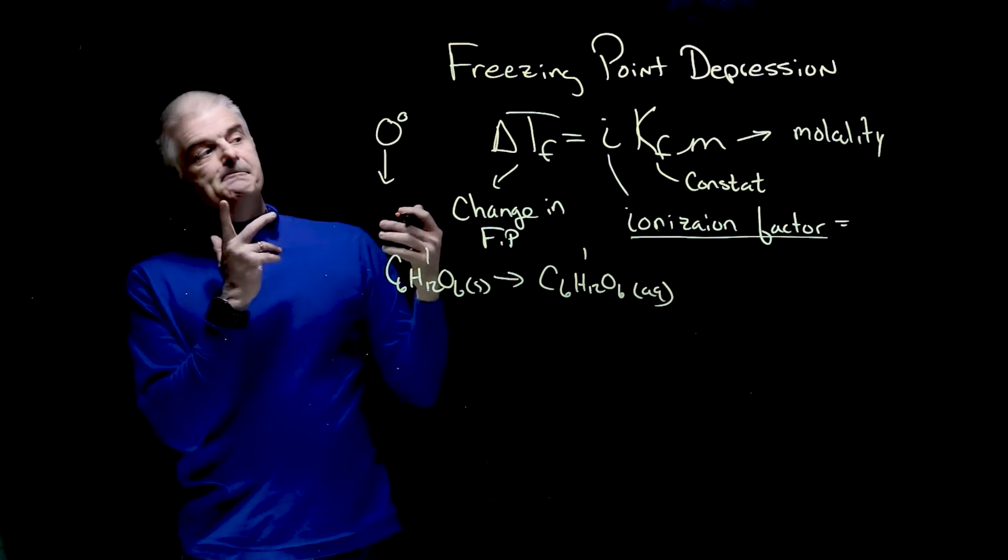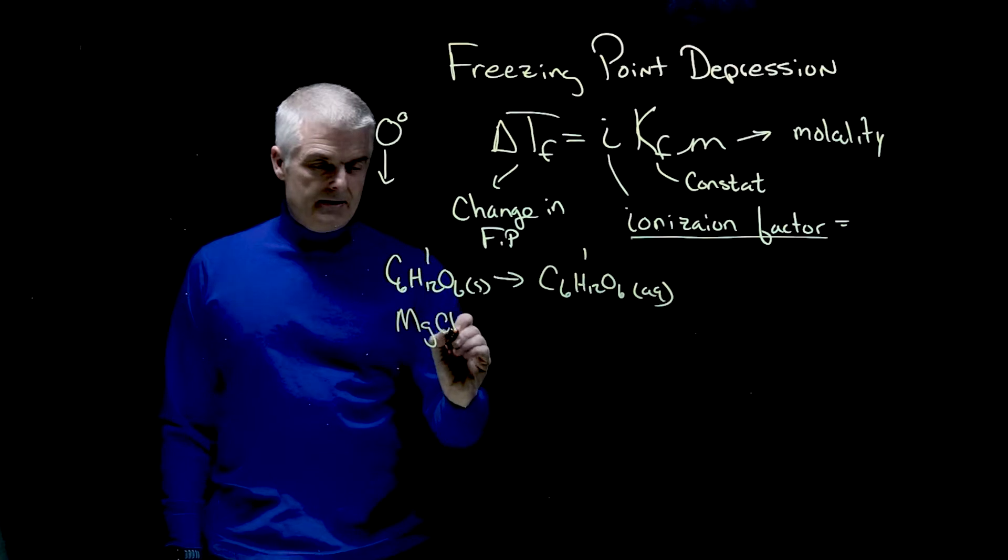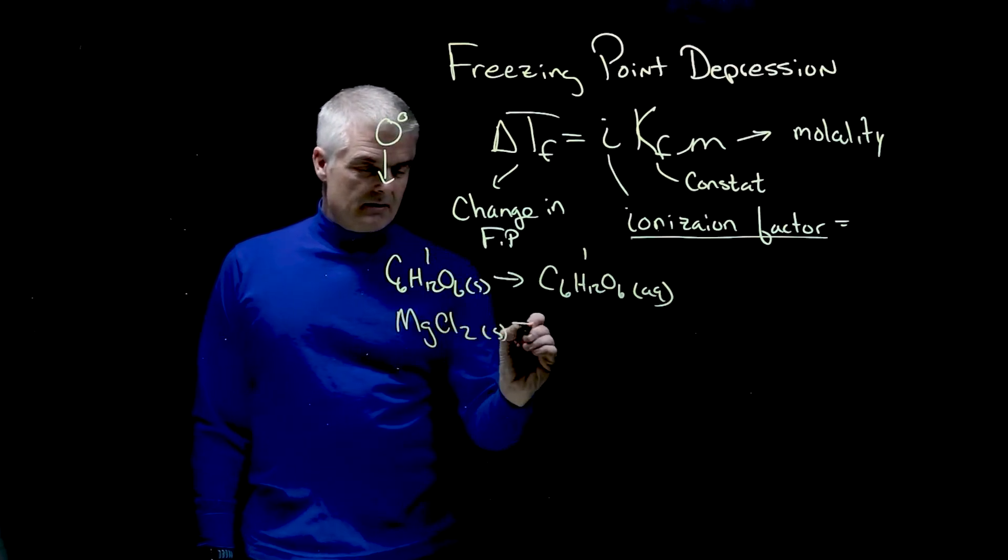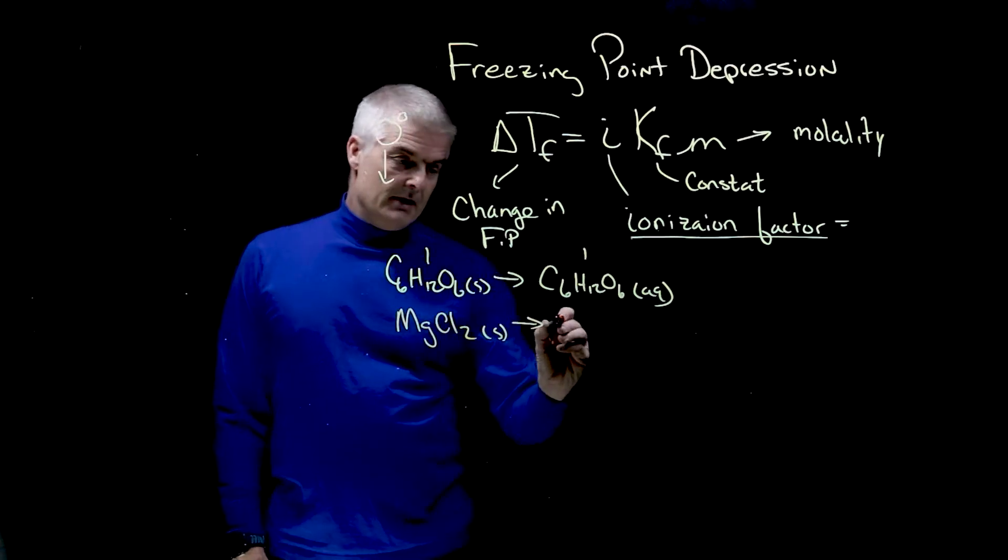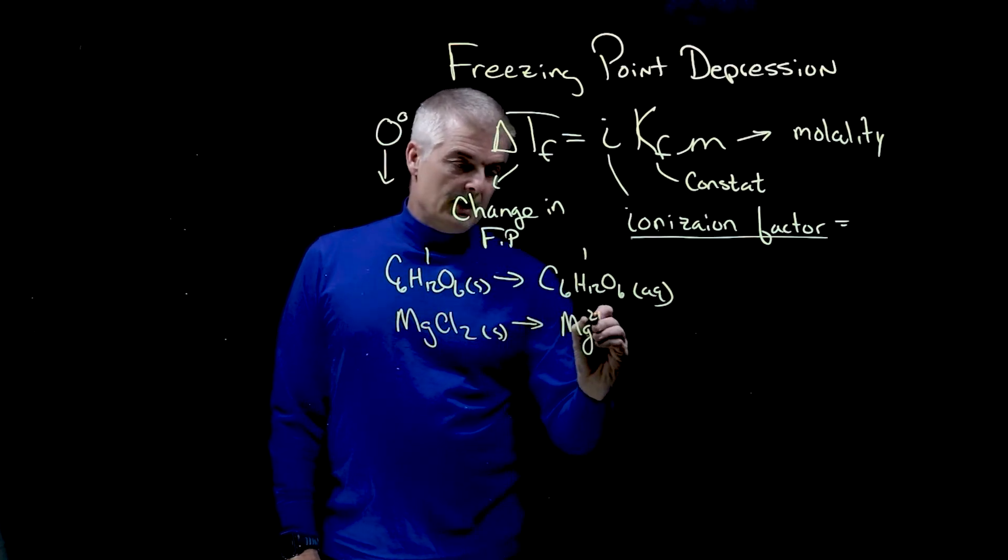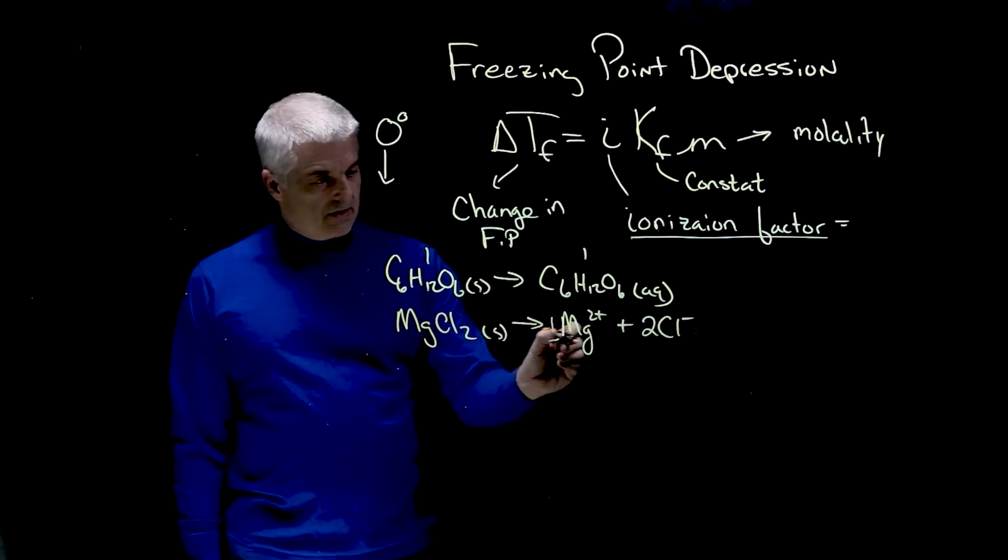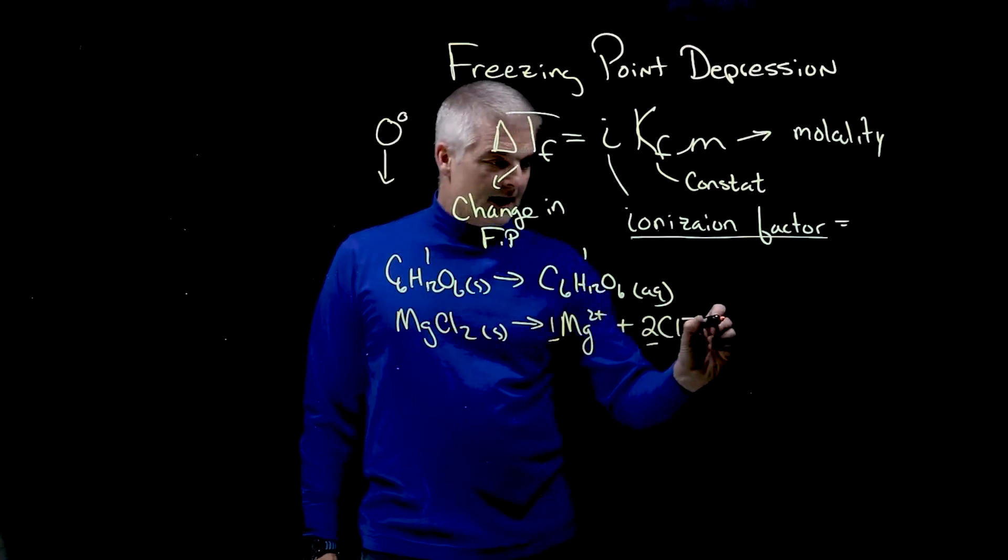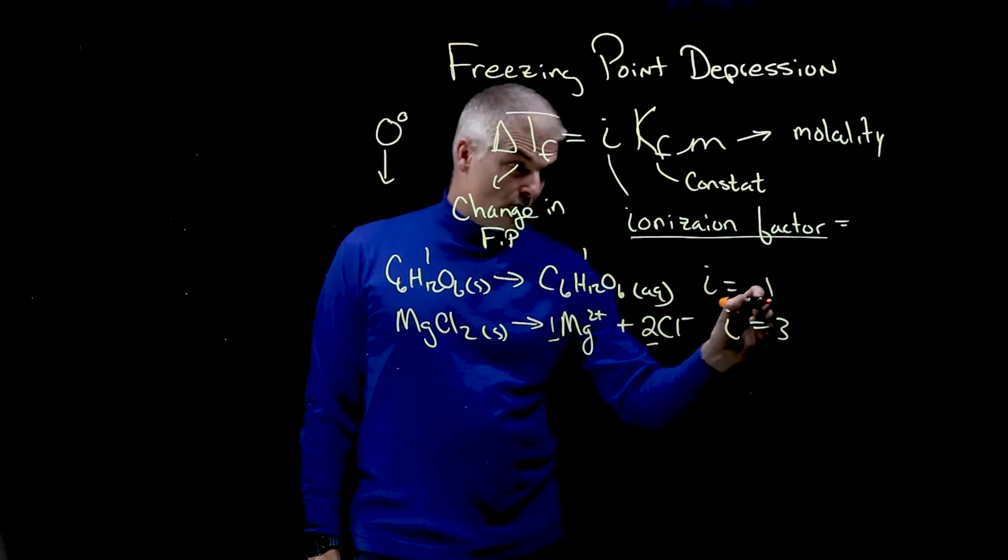But if I have a salt, let's say magnesium chloride solid, that's going to break apart, because it's a soluble ionic compound, into Mg2+ plus two chlorides. And if you count there, there's one here plus two. The I for this guy is three. The I for this guy is one.